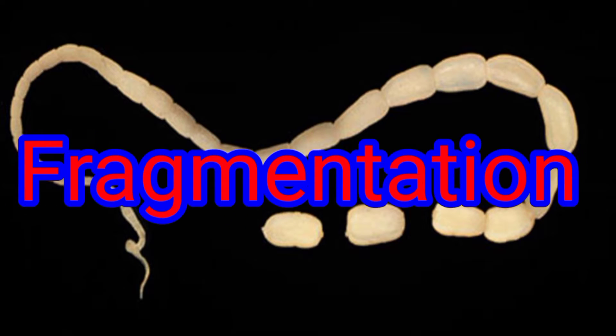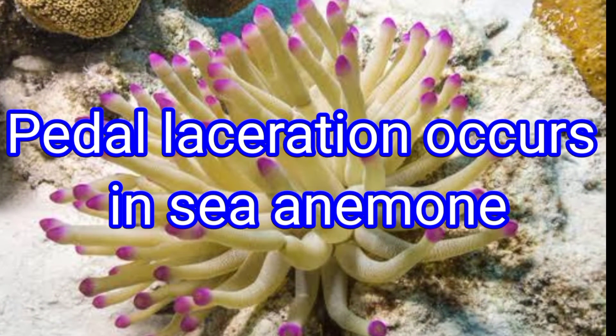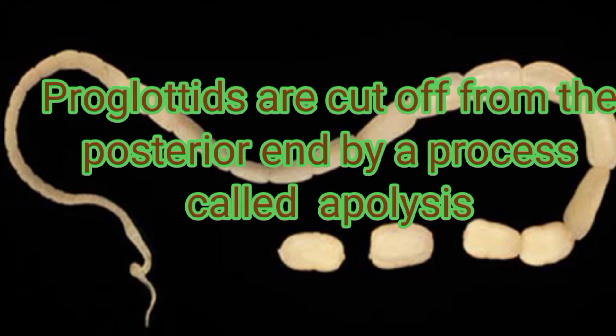Fragmentation or pedal laceration occurs in many genera of sea anemone. Fragmentation also occurs in Taenia solium. The gravid proglottids are the oldest at the posterior end of the strobila. The gravid proglottids are regularly cut off either singly or in groups by a process called apolysis.